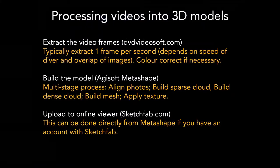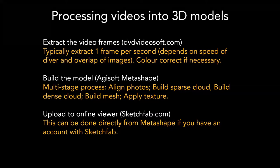This is the software we use for the whole process — I'm not going to go through it in detail but just to say it's all accessible to you. The first thing we do is extract still frames from a video, typically at one frame per second, using free software, then color-correct and white-balance them if needed. We then have a folder of 100 or 200 images that we import into software called Agisoft Metashape. You can get a 30-day free license and the standard version is around 60 US dollars.